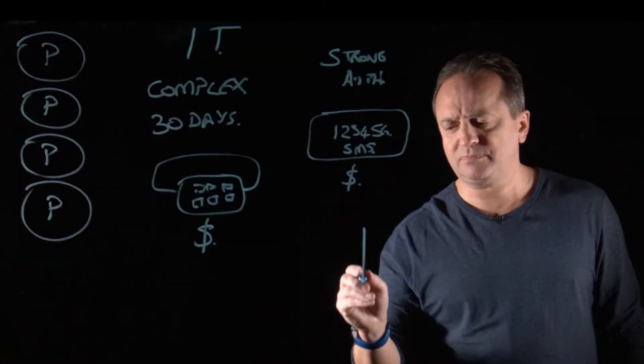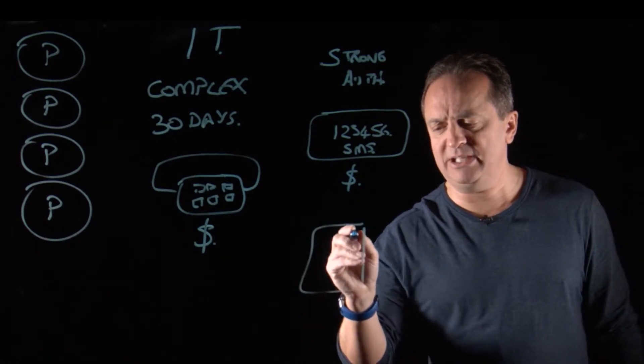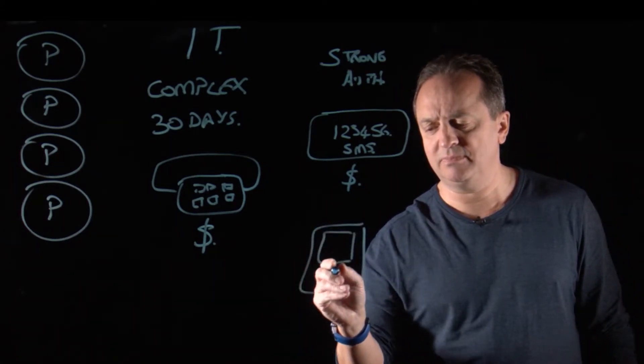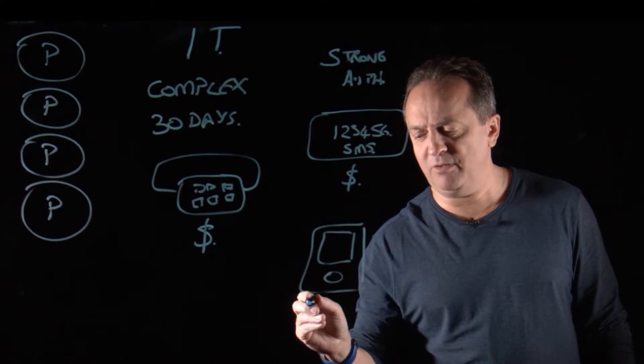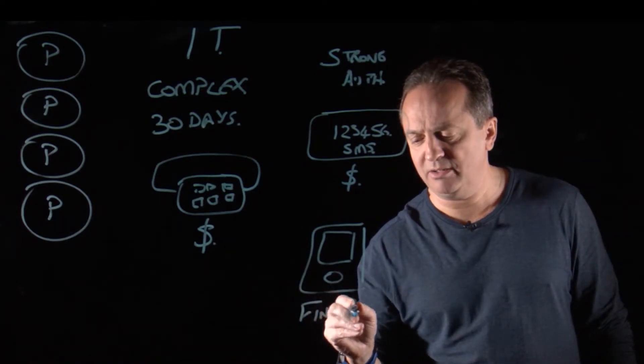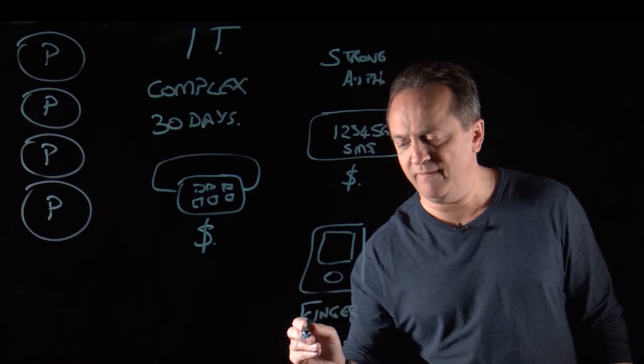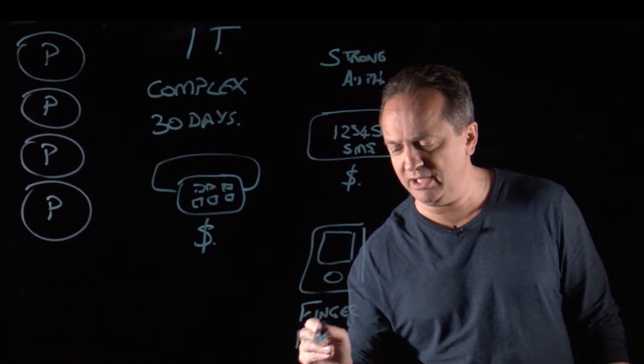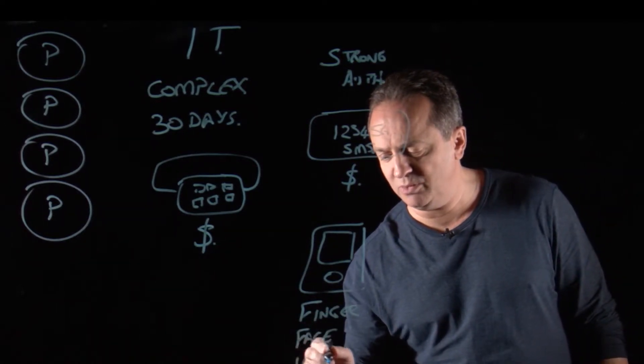And what we've seen over the years, particularly in mobile phone technology, is now mobile phone technology has inbuilt biometric sensors built in, whether that's for fingerprint recognition, for facial recognition, we've seen some devices with iris recognition.